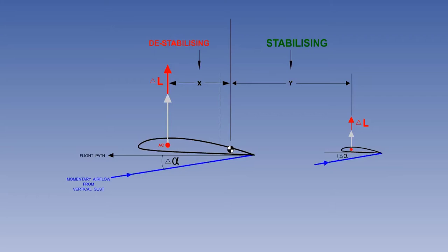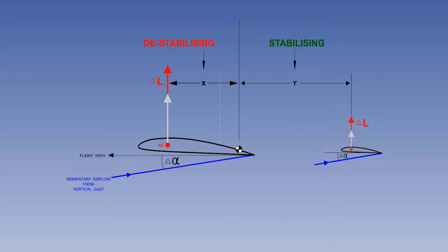Now let's consider what would happen if the centre of gravity is moved further aft. A CG position would eventually be reached when both the destabilising moment and the stabilising moment are the same. If a gust were to change the angle of attack, the aircraft would be displaced from equilibrium, but no net pitching moment would be generated. The aircraft would not displace any further, but would not start to return towards its previous equilibrium either — it would stay displaced. This represents neutral longitudinal static stability.